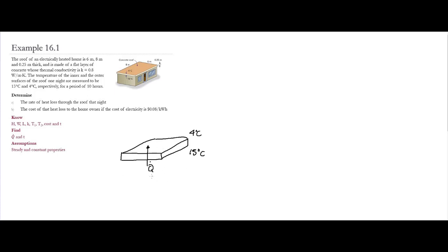The cross-sectional area for this problem is perpendicular to the heat transfer rate. So the cross-sectional area in this case is simply going to be 8 meters by 6 meters. So since we determined that it's going to be a one-dimensional steady conduction case, we could write Fourier's law as this.